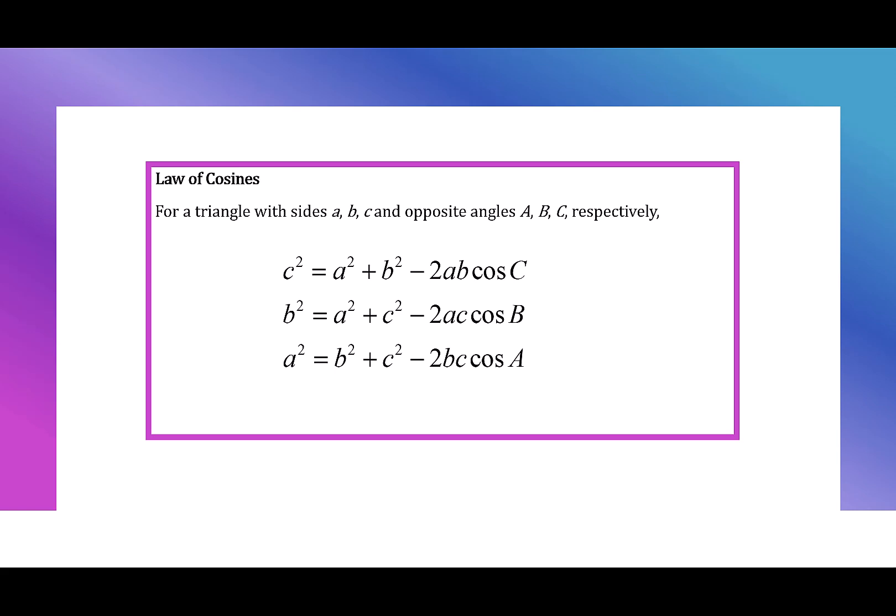We have c squared equals a squared plus b squared minus 2ab times the cosine of C. We have b squared equals a squared plus c squared minus 2ac cosine of B. And we have a squared equals b squared plus c squared minus 2bc cosine of A.